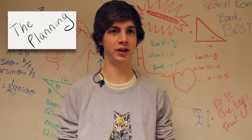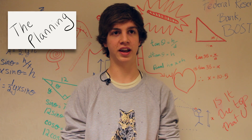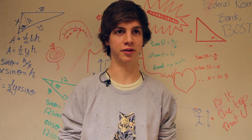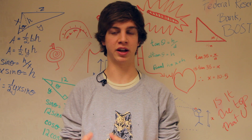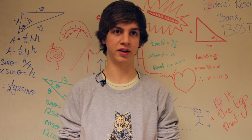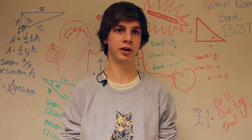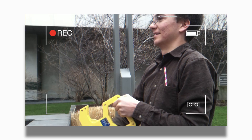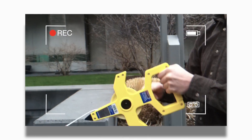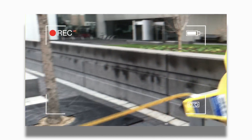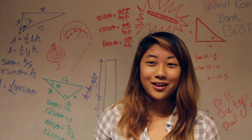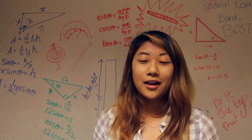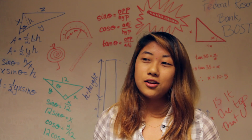First we all got into groups and figured out what we were going to do and how we were going to do it. Next we went out and did the execution — we went out on the street and did our measurements. The only materials we needed were a really long tape measure, a magnetic angle meter, and a ruler.